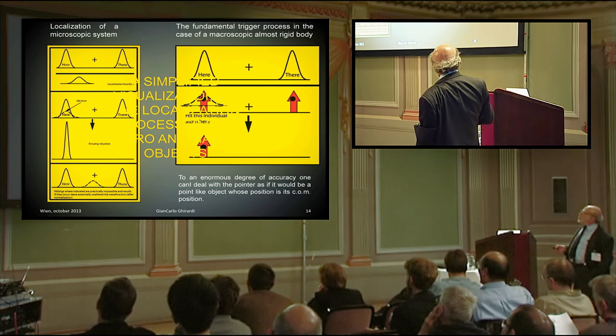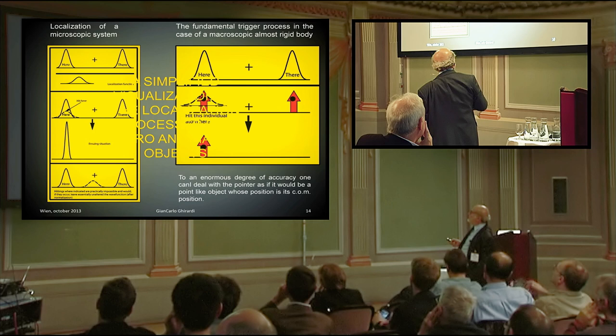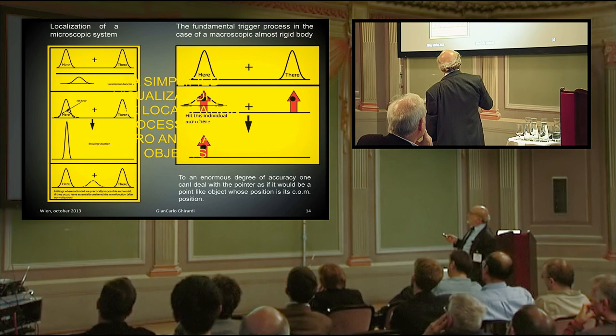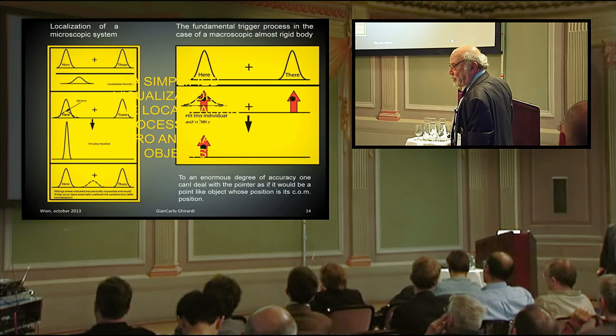But this is an important point. The trigger mechanism. In the case of a macroscopic rigid body, you can immediately see that if you have a particle there and it suffers a localization when this pointer is here, the wave function of that particle is different from zero only in that region. And so the product of this Gaussian times the wave function of the particle which is there makes zero, which means that localizing one of the particles of the pointer localizes the whole pointer in this case.